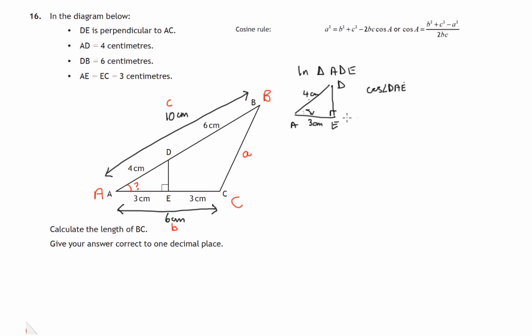The cosine of angle DAE—this angle here—is equal to adjacent three over hypotenuse four. Cosine is adjacent over hypotenuse, remember that from your SOHCAHTOA. So we can find out angle DAE—it's the angle whose cosine is three-quarters.